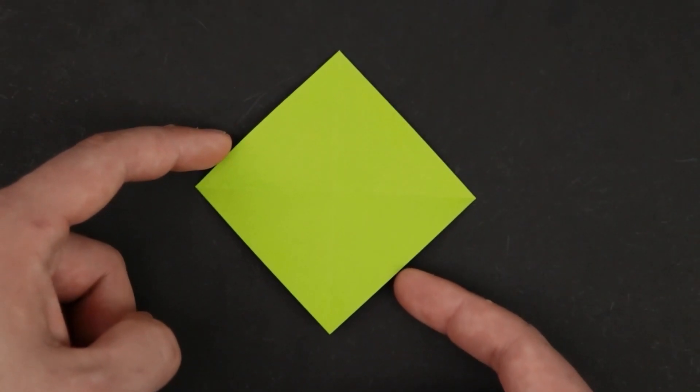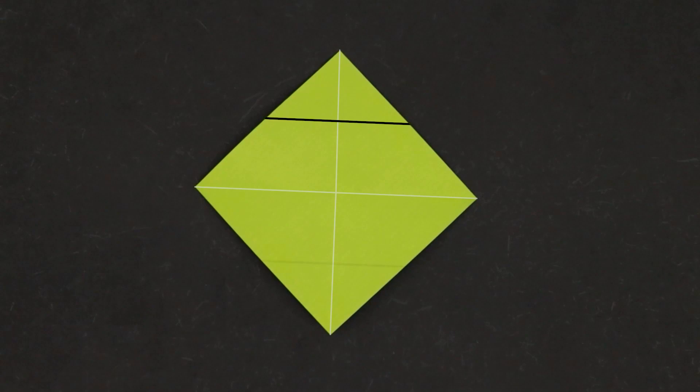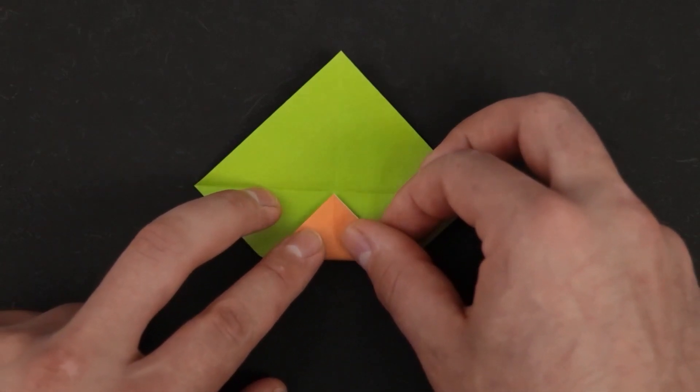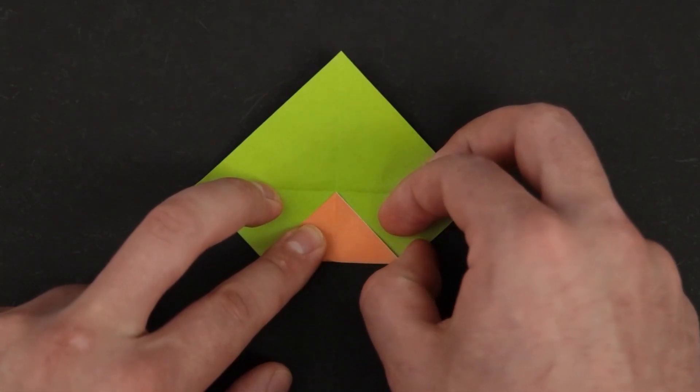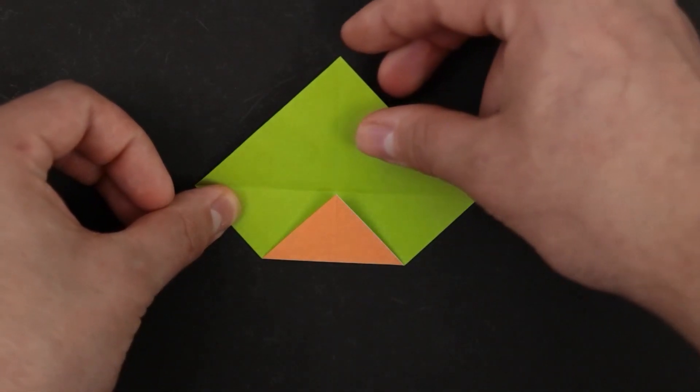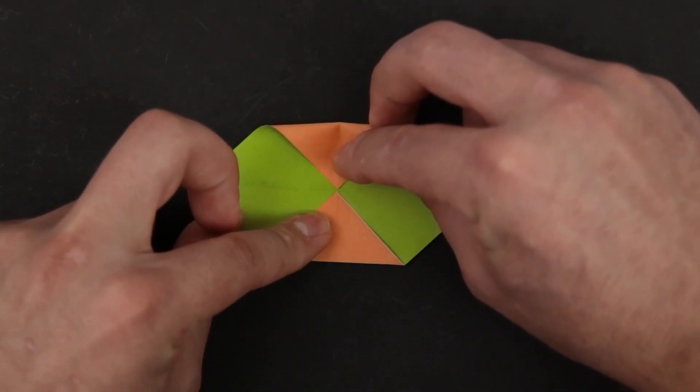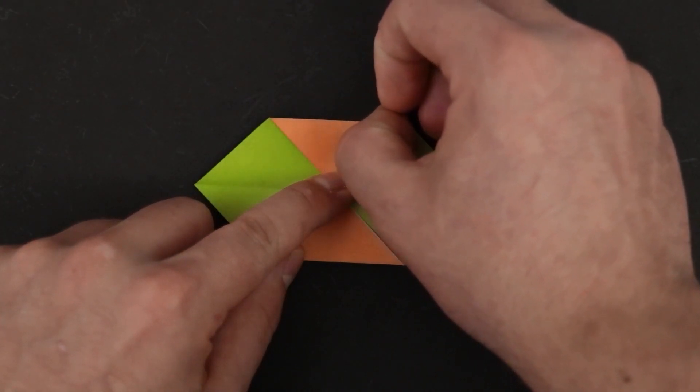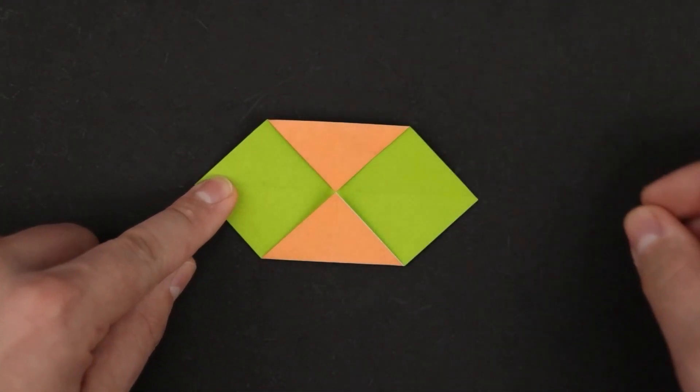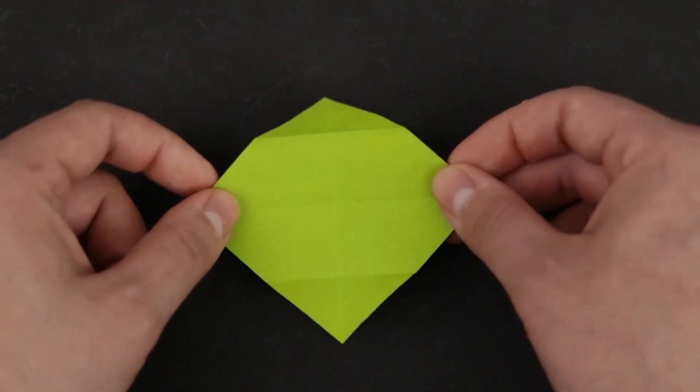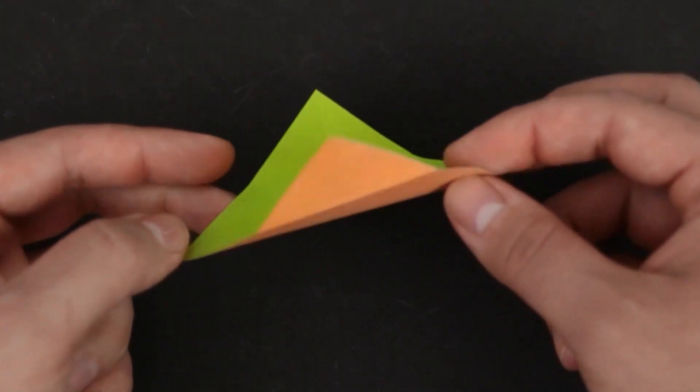Now rotate in this position and let's bring the top and bottom side to the middle. We're gonna start on the bottom, just bring it to the center, do the other, let's turn it over.